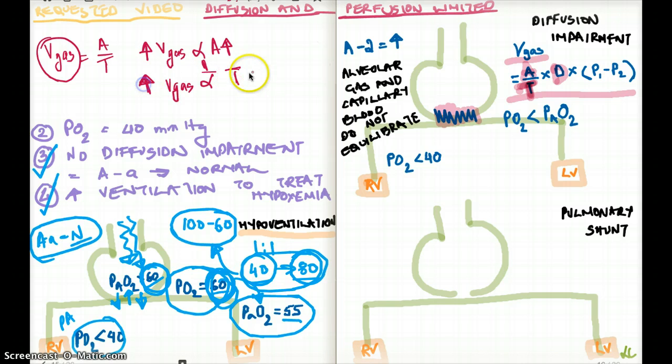So if diffusion goes up, that means thickness is low. And in this case, thickness has gone up, and as a result, diffusion is going to be low. And this is what happens in diffusion impairment.